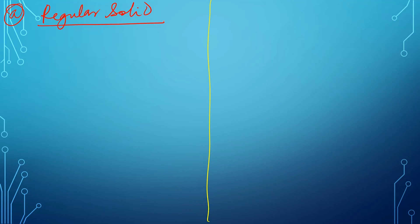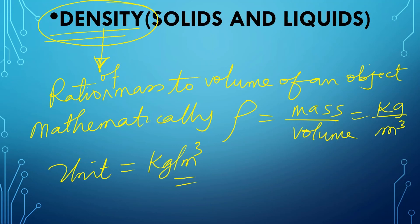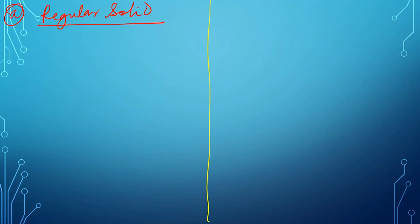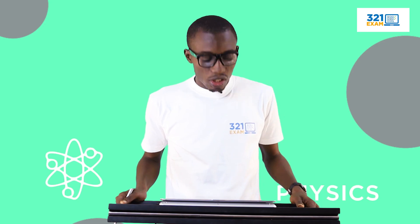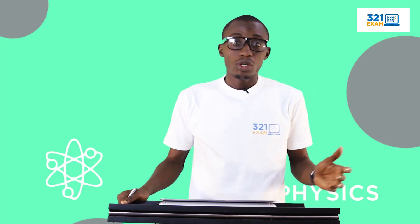A three-dimensional shape is one you can hold or fill, while a two-dimensional shape is one you can only draw. To find the density of a regular solid, first get the mass using a weighing balance. We discussed measuring mass using a beam balance, level balance, or chemical balance that obeys the principle of moments.